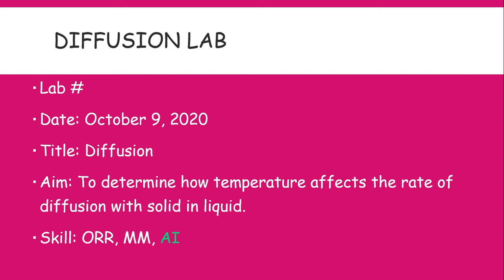The aim begins with 'to determine how temperature affects the rate of diffusion with a solid diffusing in a liquid.' The skills we are looking at are ORR, MM, and AI. Please be reminded that students are not to be assessed on more than two skills for any particular experiment, but for the purpose of demonstration I am using three skills here.